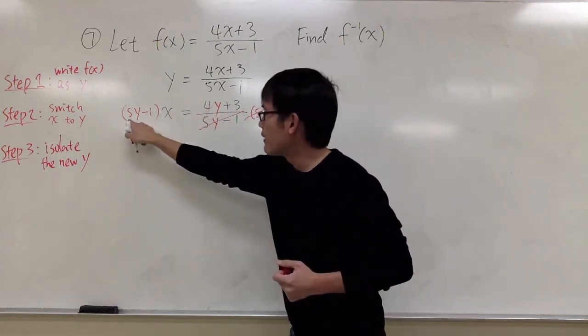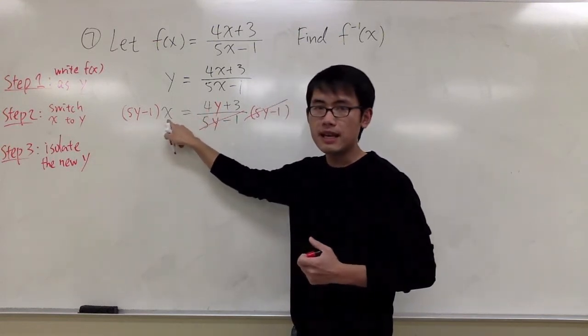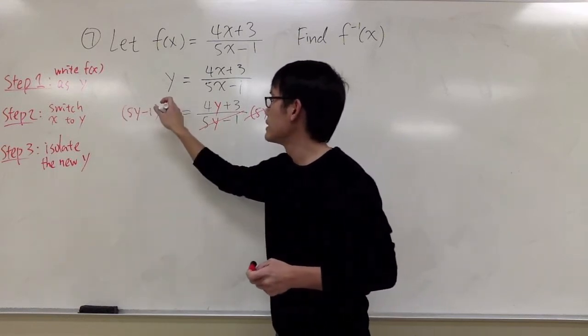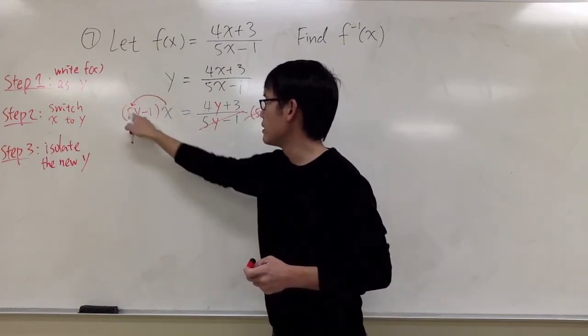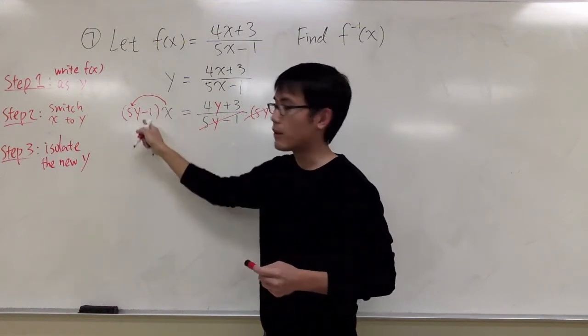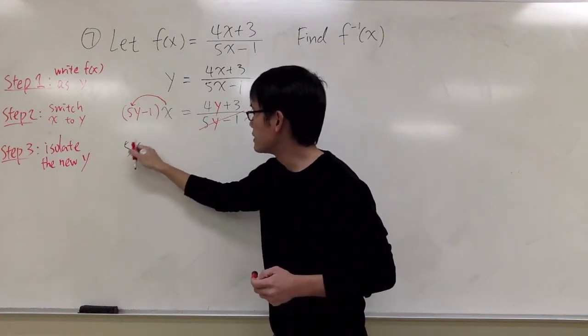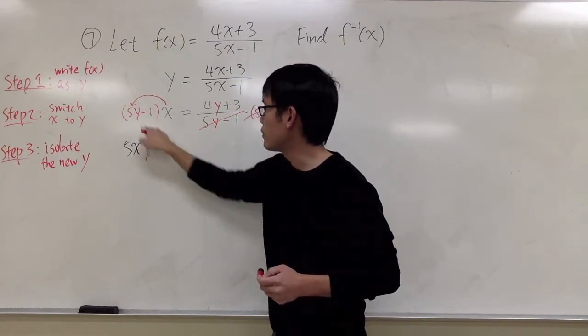And right here, I have 5y minus 1 times x. I am going to distribute the x backwards. Take the x, multiply with the 5, and the y, like x times 5y. So this part I will get 5xy, and we also have the y right here.